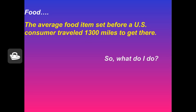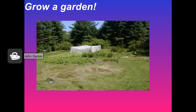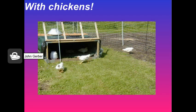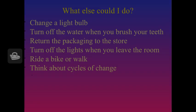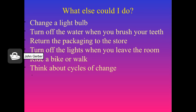So what are you going to do about it? The answer is obvious: let's grow a garden. Let's have animals in the garden — here are some of my chickens in the backyard. You don't have to live on a farm to raise good food. Maybe that's not for you, but what can you do? Change a light bulb. Turn off the water when you brush your teeth. Return the packaging to the store. Don't waste things. Turn off the lights when you leave the room. Ride a bike. Take a walk.